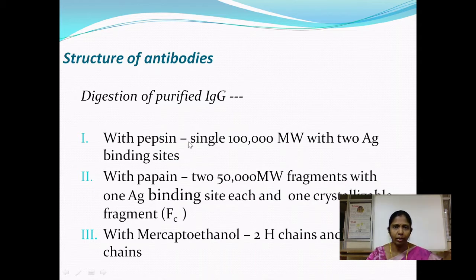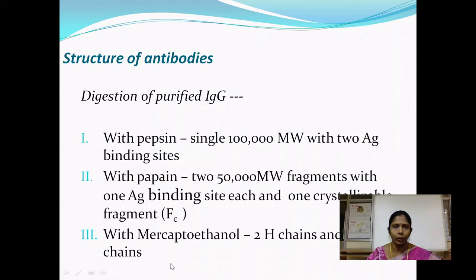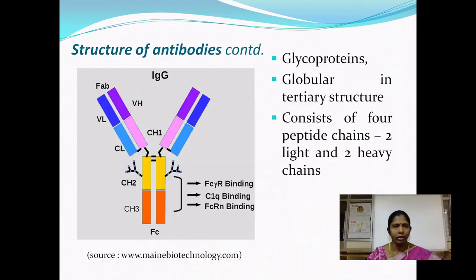When the same IgG fraction was subjected to treatment with beta-mercaptoethanol, four polypeptide chains were obtained — two heavy in molecular weight and two comparatively lighter in molecular weight. On combining the information obtained from all these experiments, the structure of antibodies could be deciphered.